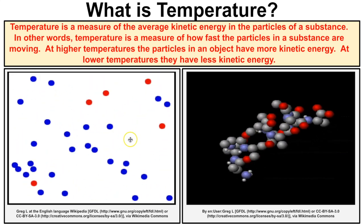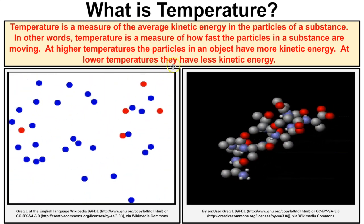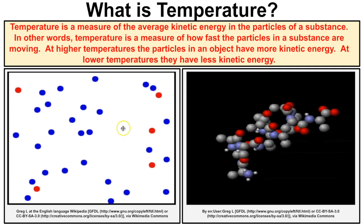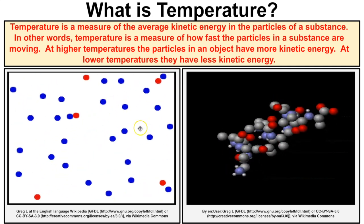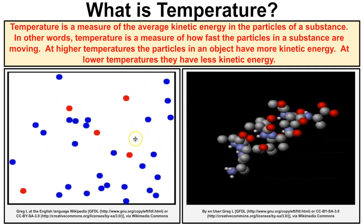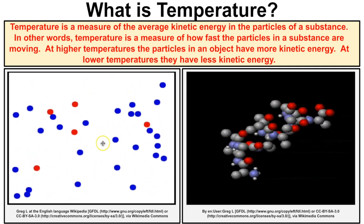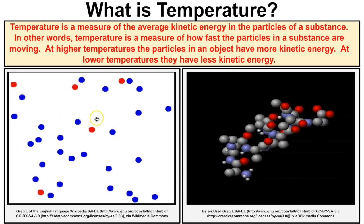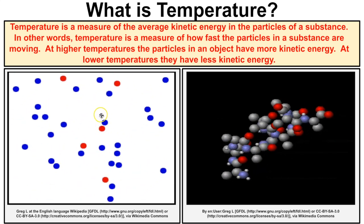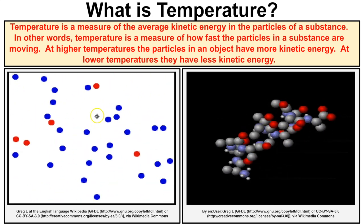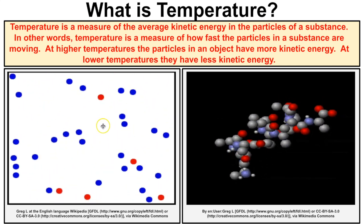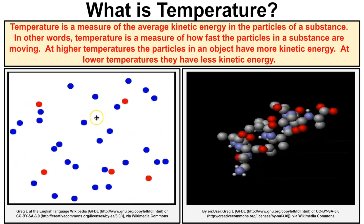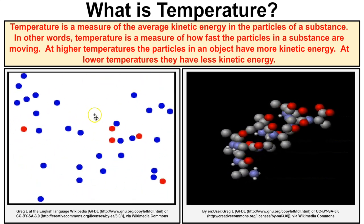Understand that relationship between temperature and the amount of kinetic energy those particles have — they are directly proportional. As temperature increases, so does kinetic energy, and as temperature decreases, kinetic energy also decreases.